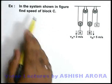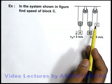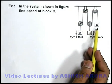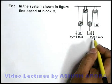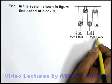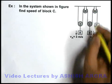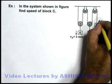In this example, we are required to find the speed of block C in the system shown in figure. Here we can see that blocks A and B are coming down at 3 meters per second and 5 meters per second. We assume block C is going up.